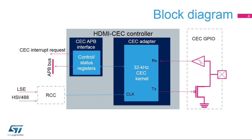Two clocks are available for the HDMI CEC controller: the APB clock, or PCLK, for the APB interface, and the 32 kHz kernel clock for the CEC adapter. The kernel clock can be derived from LSE or HSI divided by 488 clock sources.